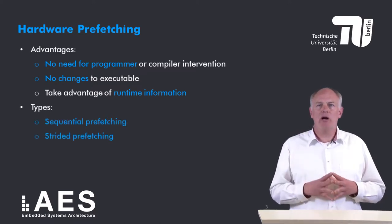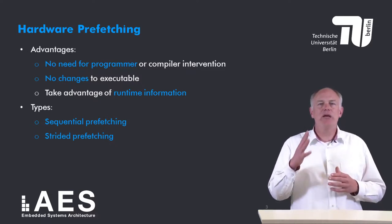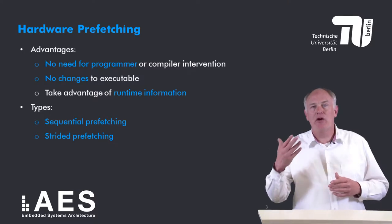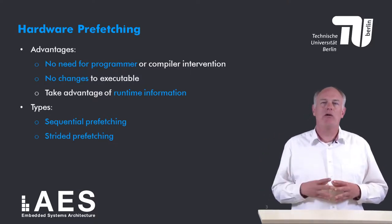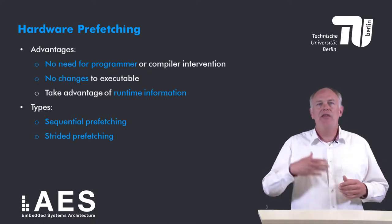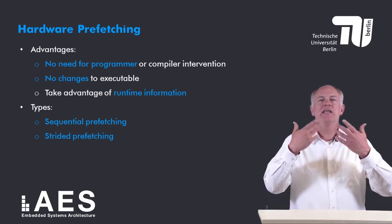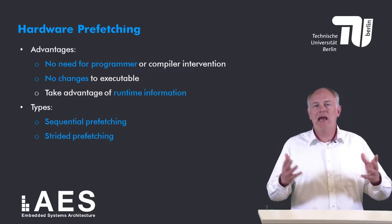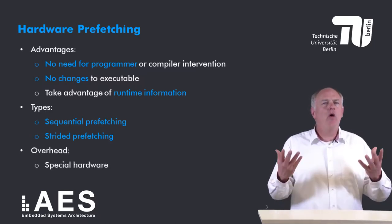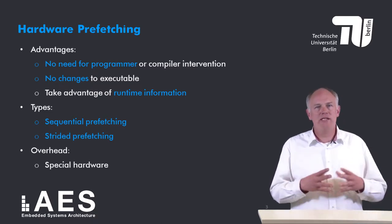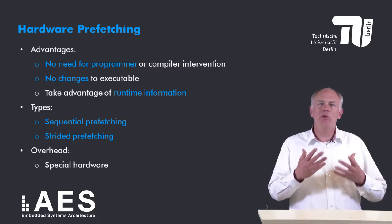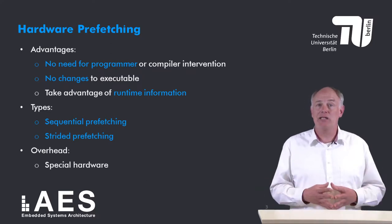Roughly two types of hardware prefetching can be distinguished: sequential prefetching and strided prefetching. In sequential prefetching we predict if we are soon going to need the next sequential block or not. In strided prefetching the next access block does not have to be the next sequential block but can be at a certain distance or stride from the currently accessed block. The overhead of hardware prefetching is that we need additional hardware, which needs to be limited since otherwise we might have used the area for something else, such as a bigger cache.